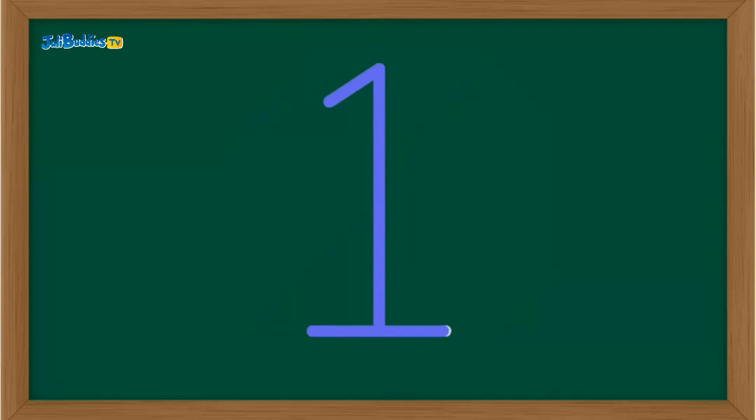Fantastic! Now for number two. Make a curve, then a slanting line down, and finish with a straight line across. Wow, that's a magnificent number two.